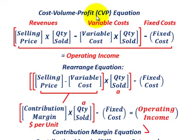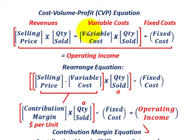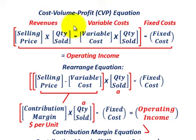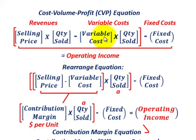For total costs: variable cost of $30 per unit times quantity sold, plus the fixed cost of $2,000. Dollars (y) is a function of units sold. Now let's put this into equation form — the CVP equation. Operating income equals revenues (selling price × quantity sold) minus variable costs (variable cost per unit × quantity sold) minus fixed costs.